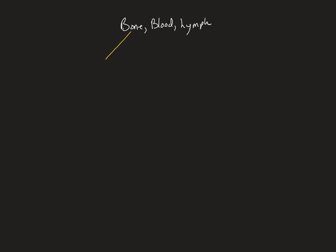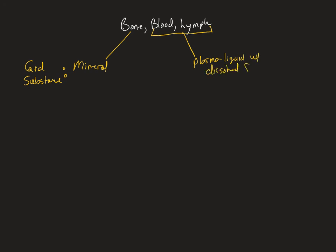We're going to talk more about bone and blood later. What I want you to remember for now: the ground substance for bone is a mineral. For blood and lymph, the ground substance is a plasma liquid with dissolved fibers. Because the fibers are dissolved, you can't see them, but they are present — therefore it is a connective tissue. That is it for this section. Take a break and then move on to your next lecture.